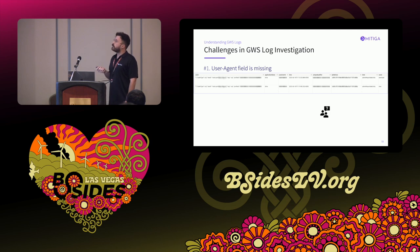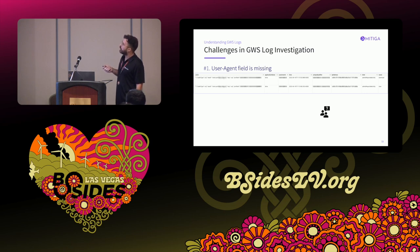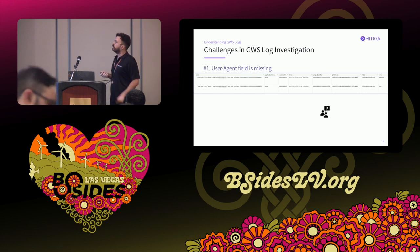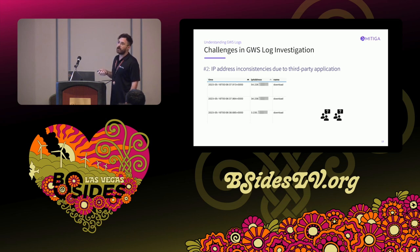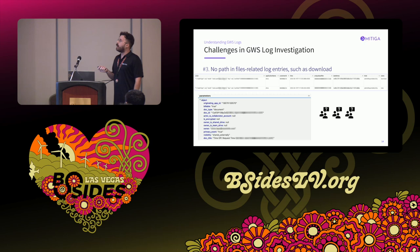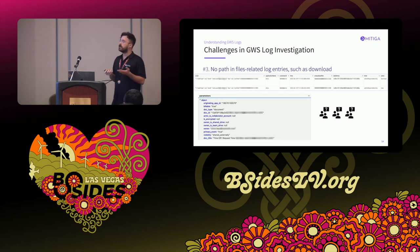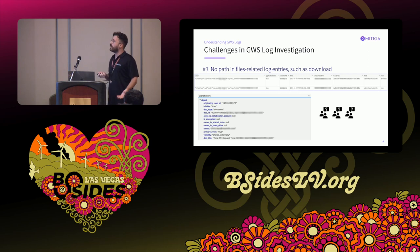Beyond the log structure, we found other challenges. First, the user agent field is missing — there is no user agent across all Google Workspace logs, which makes anomaly detection harder. Second, there are IP address inconsistencies: we see three download events from the same user in the very same second but from three different IP addresses, which can mislead an investigator. Third, there are no file paths in file-related log entries. In a download event, you can see the document title, type, and ID, but you cannot know the path the file came from.